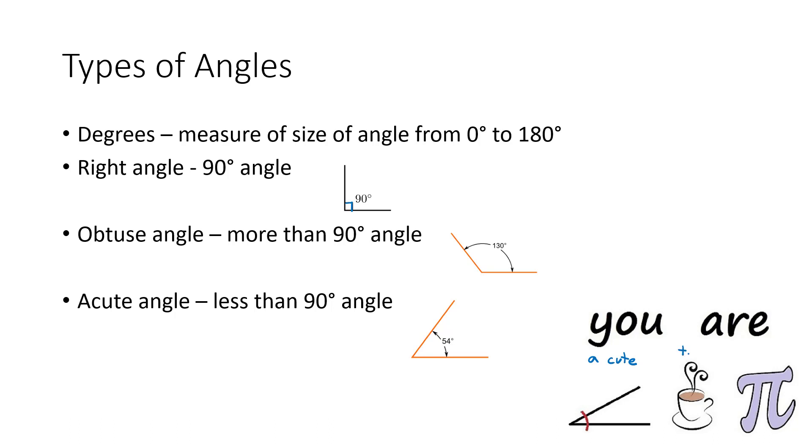This would be some t, and this last symbol would be pi. So you are acute pi. Math puns.